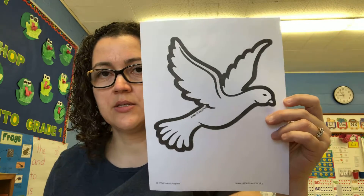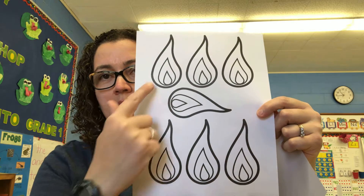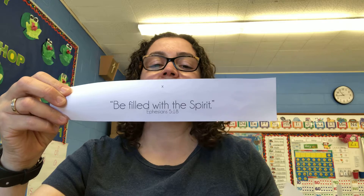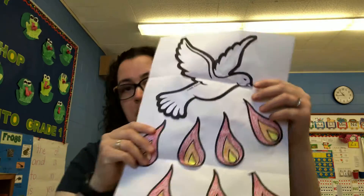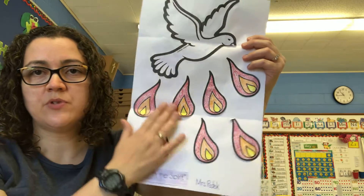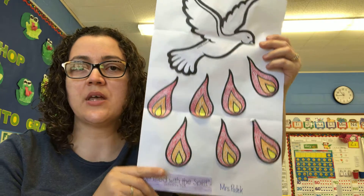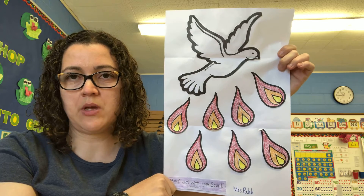You're also going to need your dove that looks like this, okay? And you're going to need this sheet that has seven flames — seven flames — and there should be one strip of paper that looks like this and it says 'be filled with the spirit,' okay? So you're going to have those three sheets plus that big blank white sheet, and you're going to do a craft that looks like this. Your craft is going to look similar to this, and then you're going to color and cut out those sheets and glue them onto your big paper to look something like this.